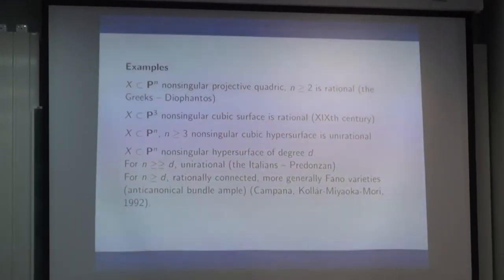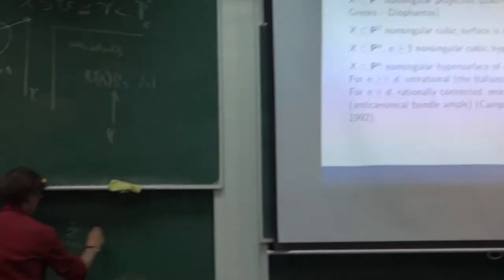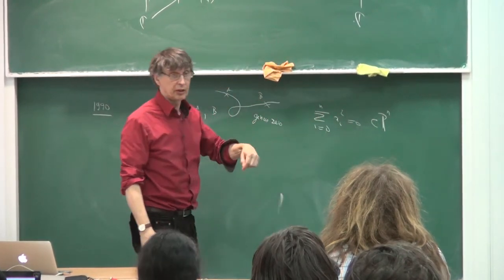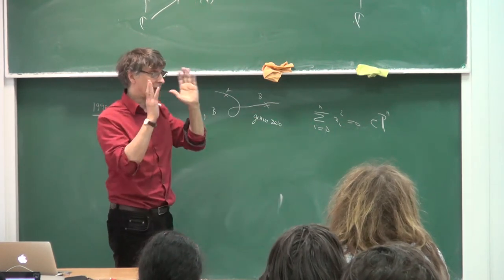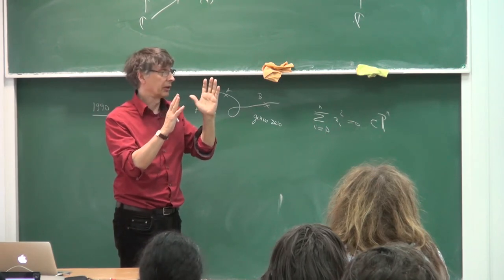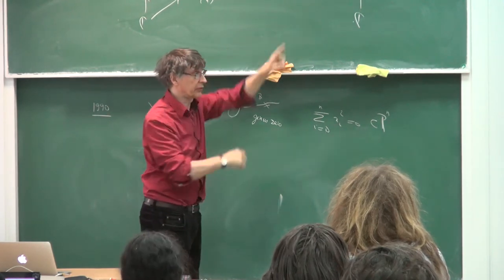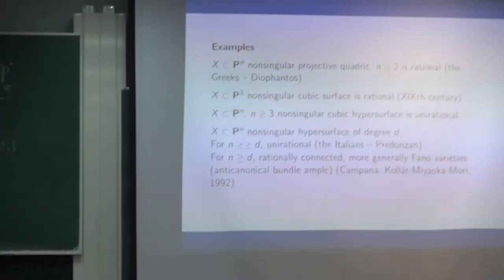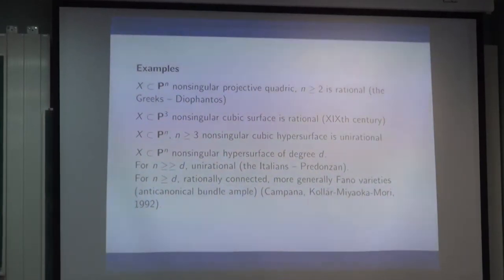The same argument that works for a conic works for an arbitrary non-singular quadric. If you take the equation sum of xᵢ squared equals 0 in projective space, this is also rational by exactly the same argument. The difference from the one-dimensional case is that in higher dimension you just have some open set isomorphic to an open set in projective space, rather than an actual one-to-one isomorphism.